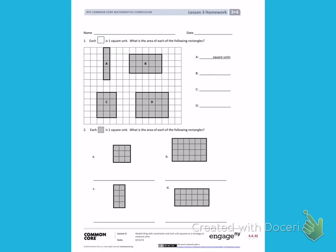Number 1. Each square is one square unit. What is the area of each of the following rectangles? Today we talked about how we can find the area by counting the squares.